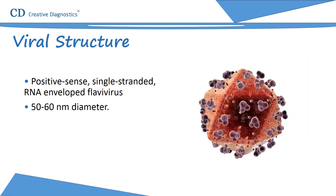Yellow fever virus is a positive-sense, single-stranded, RNA-enveloped flavivirus with a diameter of about 50 to 60 nm. The virus is transmitted via the saliva of an infected mosquito. Local replication occurs in the skin and regional lymph nodes. The virus enters cells through receptor-mediated endocytosis; RNA synthesis occurs in the cytoplasm and protein synthesis takes place in the endoplasmic reticulum. Virions are released through the cell membrane, and the viral envelope contains a lipid bilayer taken from the infected cell.